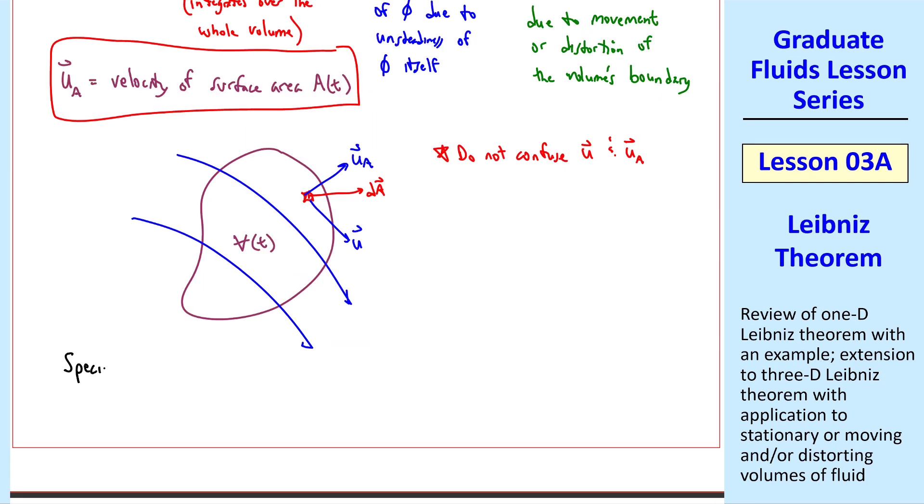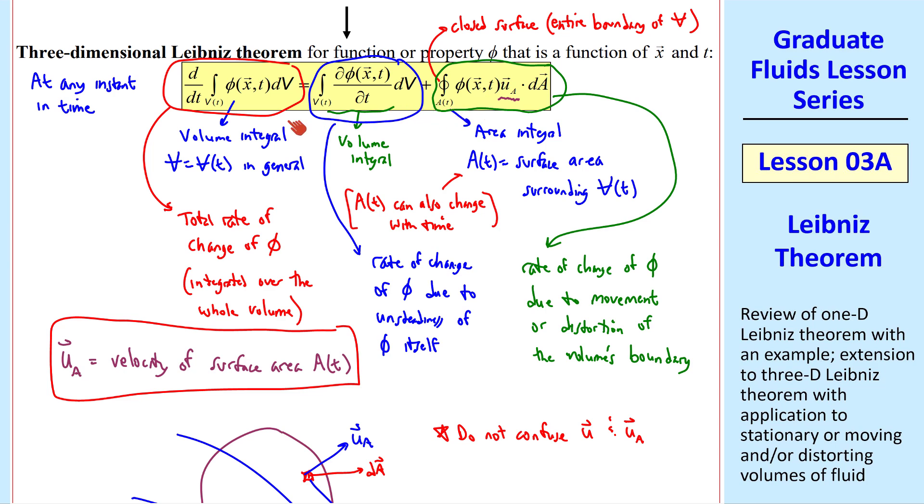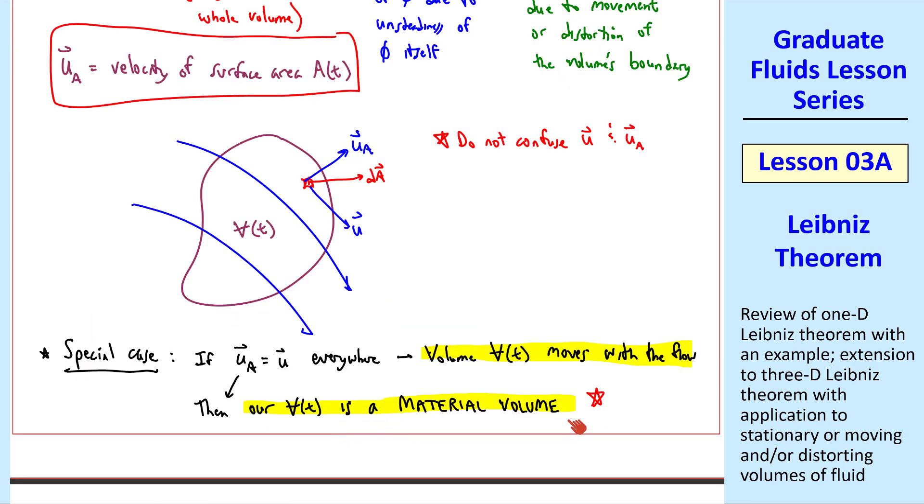I want to point out a special case, which is useful in fluid mechanics. That is, if uA equal u everywhere, and by everywhere I mean the whole volume. In other words, this whole potato is moving with the flow, distorting as necessary, but always moving with the flow. So volume v(t) moves with the flow. Then our volume v(t) is a material volume. We'll talk about this more in the next lesson. I just want to emphasize that this is a special case. In the general case, this volume can be moving in some arbitrary direction and distorting, regardless of what the flow is doing. And the 3D Leibniz theorem applies to any of those cases. This special case will be useful to us in fluid mechanics, however.